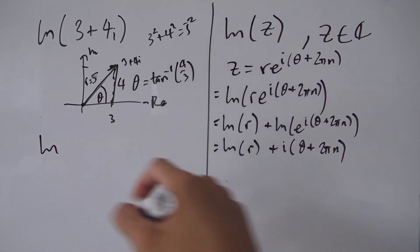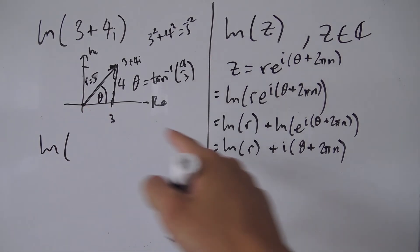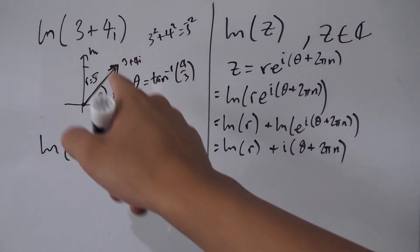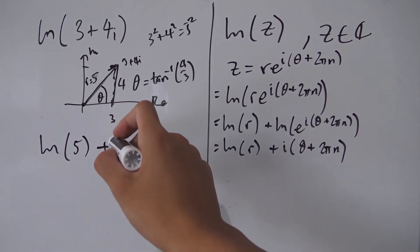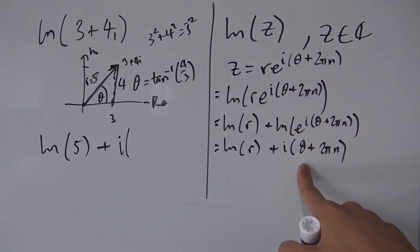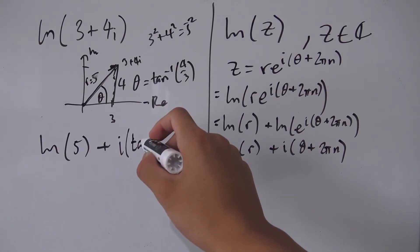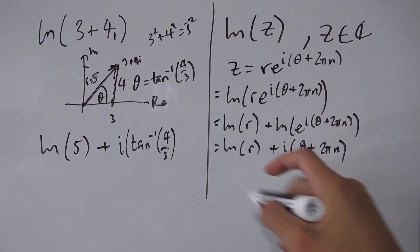So let's plug those in. So now I have the natural log, so using this formula we have right here, natural log of our radius r which is the modulus which is 5 in this case. And then we have to add it with i times theta here, but theta is arctangent of 4 over 3.